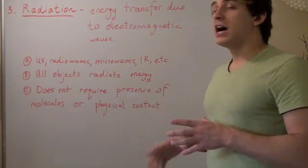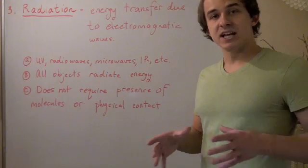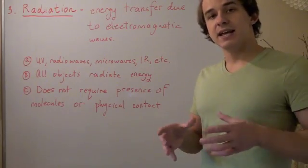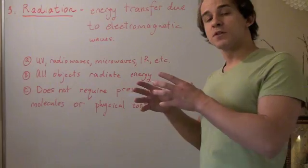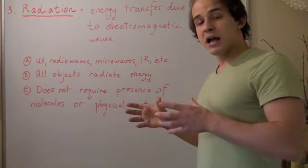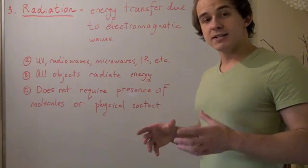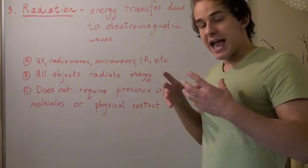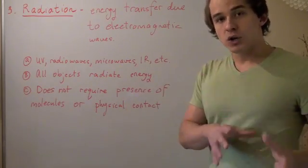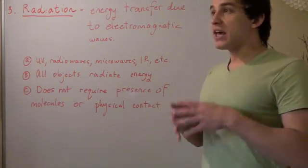One cool thing about radiation, unlike convection or conduction, is that radiation can occur in the absence of molecules or in the absence of a physical barrier. And this is seen in space. When light travels from the sun, the hot object, to the Earth, the cooler object, the waves travel in a vacuum in the absence of molecules. And that's because waves, electromagnetic waves, are actually energy bundles that carry themselves from a hot object to a cool object. And it is radiation that heats the Earth.